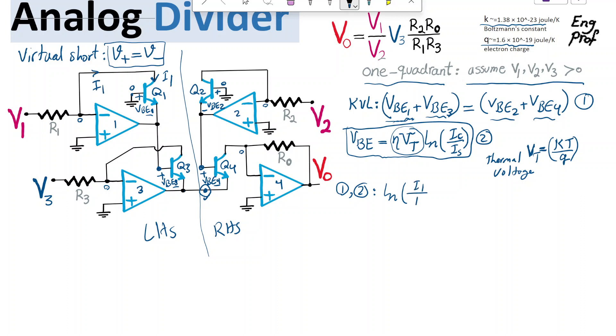So I1 divided by IS plus, for VBE3, what I get is the same thing. It's going to be natural logarithm of collector of transistor three,